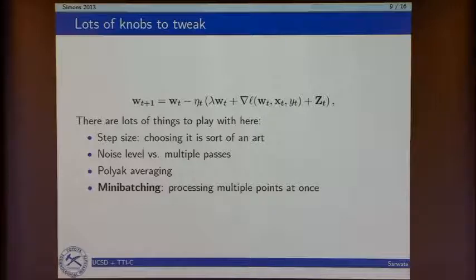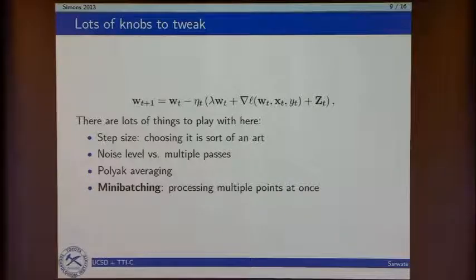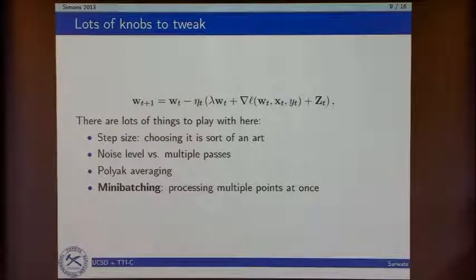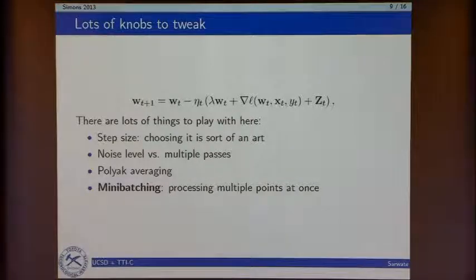There are lots of knobs to tweak when you implement any of these gradient descent procedures. You can play with the step size — just choosing 1/T and letting it run is usually not going to work well in practice, it's kind of an art. There's also the issue of noise level versus multiple passes: I could pay half my epsilon and do two passes, maybe that's better. There's also Polyak averaging, where I average the iterates — that can be much better in practice. What I'm going to talk about here is mini-batching: processing multiple points at once.